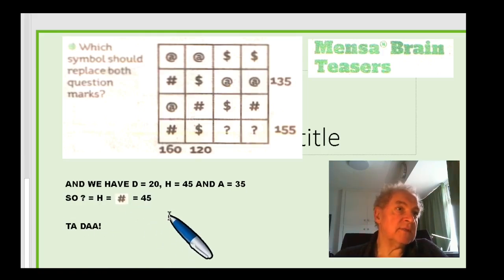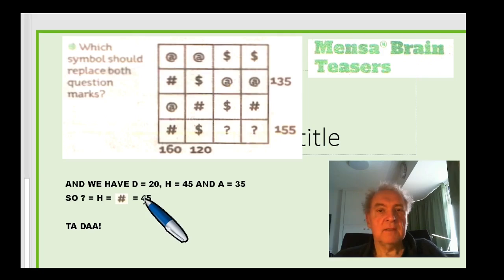We have d equals 20, h equals 45, and a equals 35, so it's h. It's the hash symbol. Ta-da!